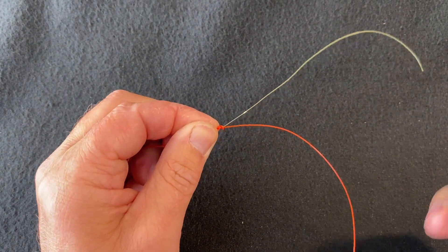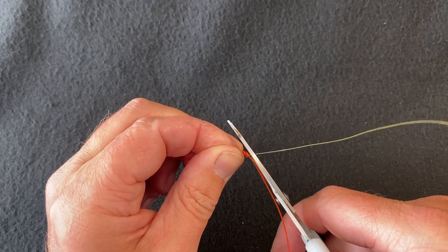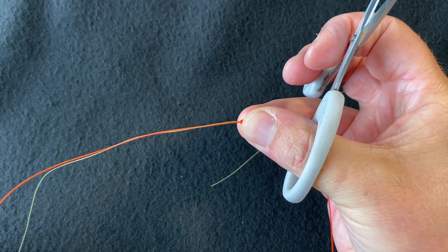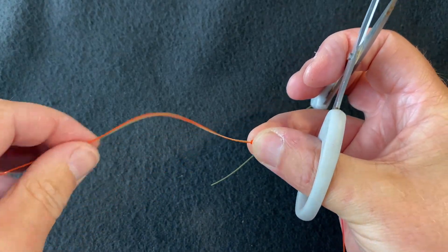Trim the knot. Trim the tag end of your leader and trim the tag end of your main line.